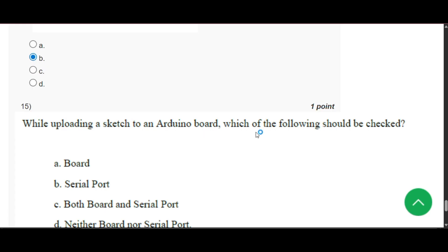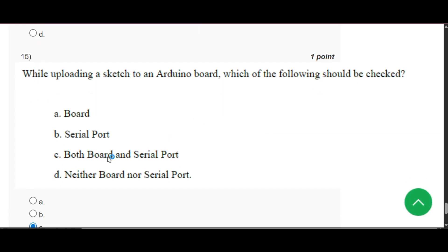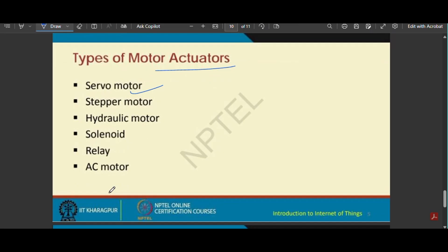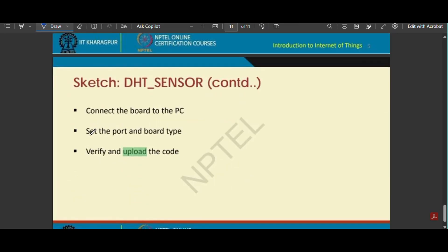Now question number 15: While uploading a sketch to an Arduino board, which of the following should be checked? So the answer will be both board and serial port, that is option C. Here you can see set the board and code type. Then we can verify and upload the code. Upload the sketch.